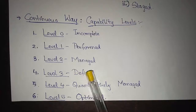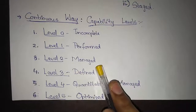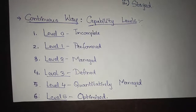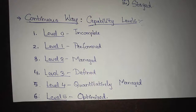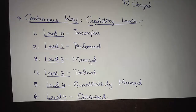Then we have Level 2, Managed. At this level, the process area has all Level 1 criteria satisfied, and work tasks and work products are monitored, controlled, and reviewed. Based on this, we evaluate the process area. A product or project is completed as an integration of many process areas — that is why we call this the Capability Maturity Model Integration, where we measure the maturity of each process area to rate the product itself.